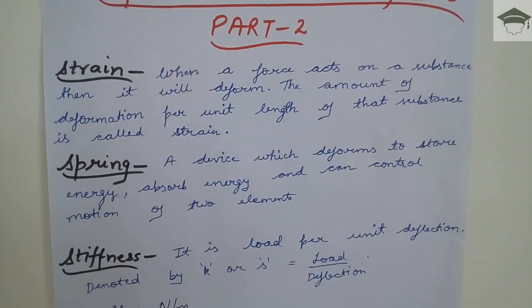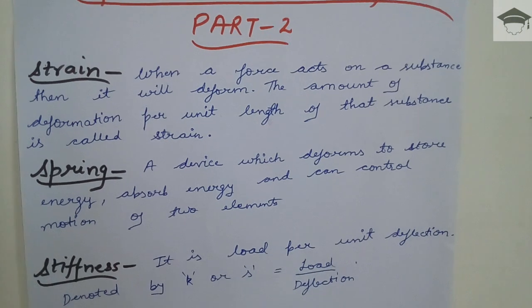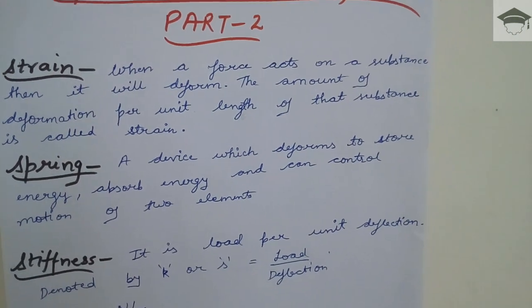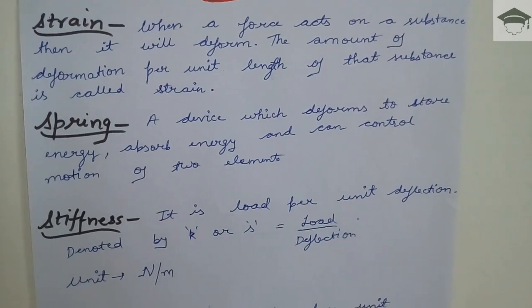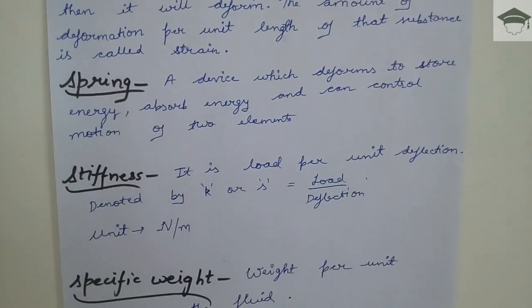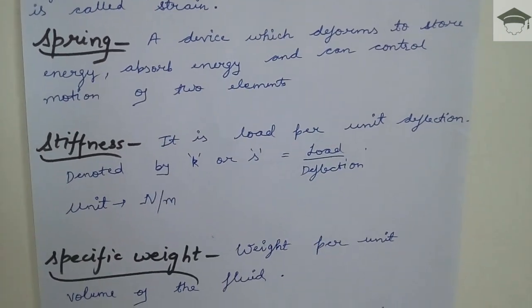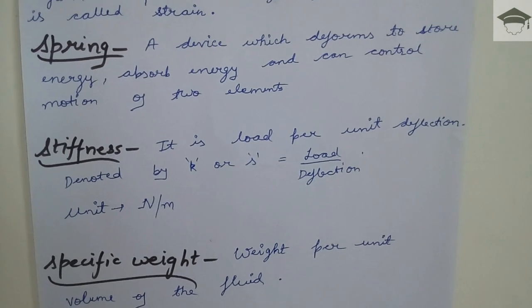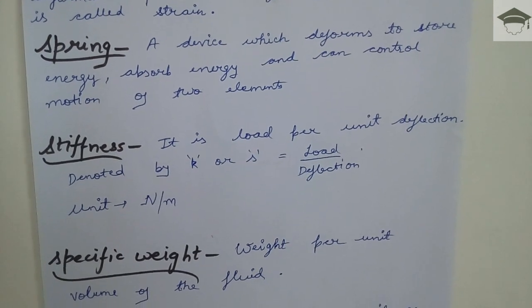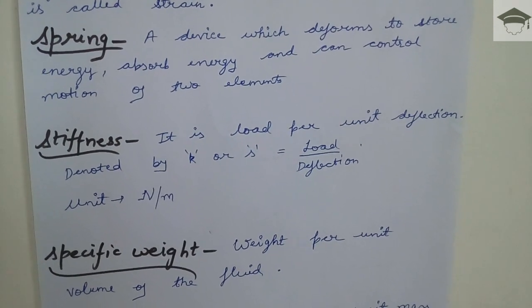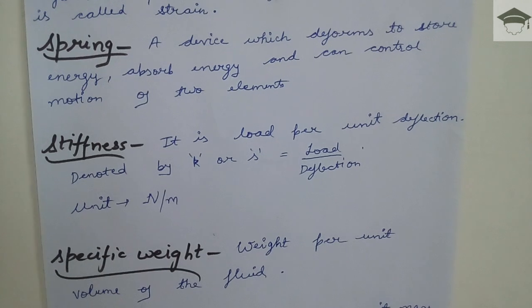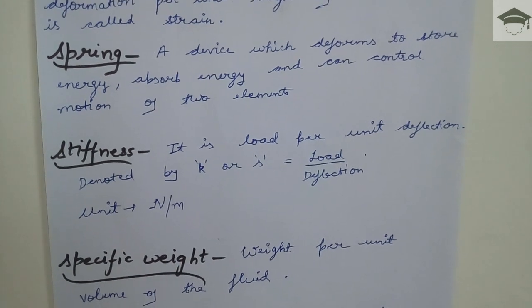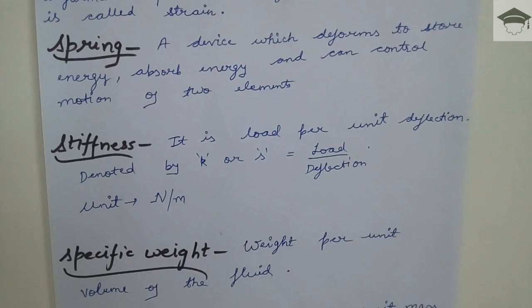Spring: a device which deforms to store energy, absorb energy, and can control the motion of two elements. Stiffness: it is the load per unit deflection, denoted by small k or small s, and its unit is Newton per meter.